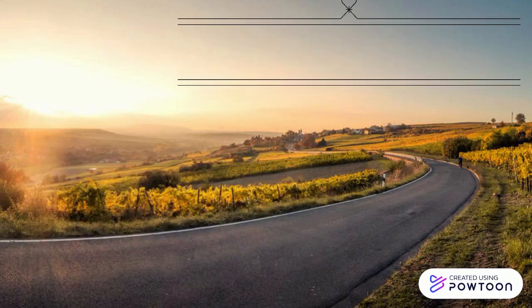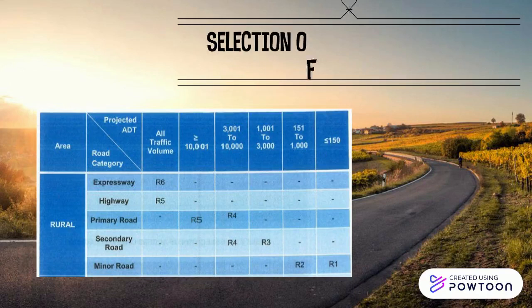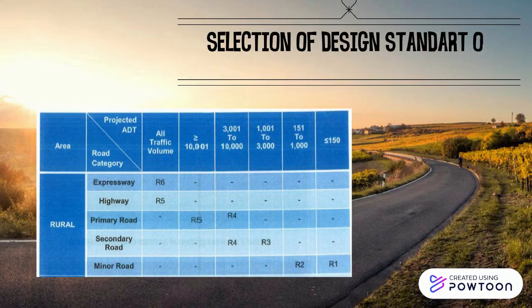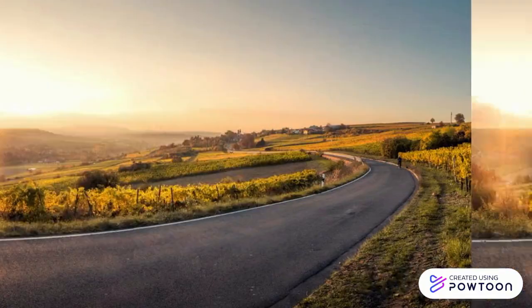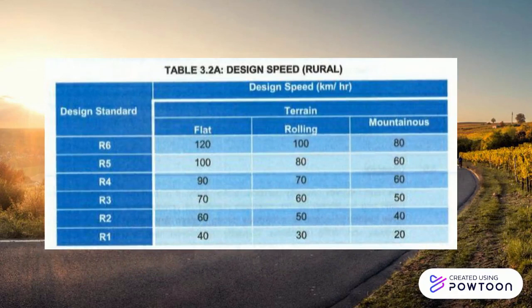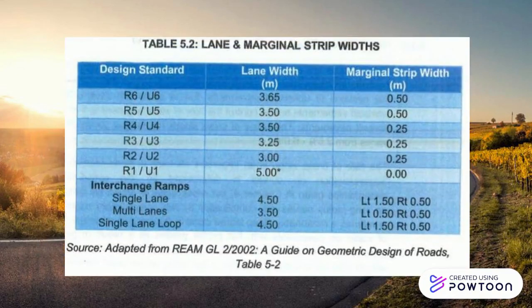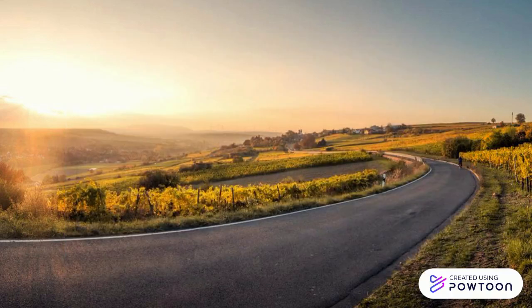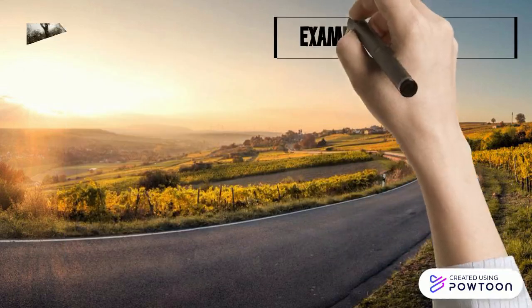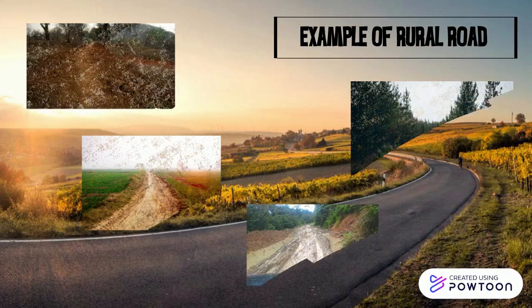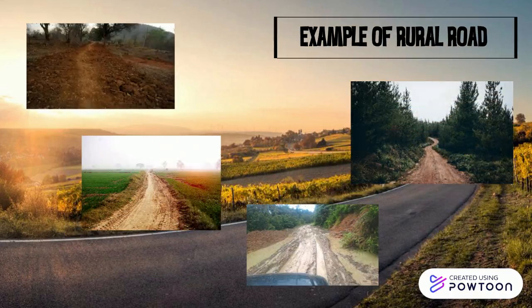This is the design standard of rural roads. The selection of the required design standard should begin with the assessment of the function of the proposed road and the area. This picture explains about design speed for rural roads. This picture explains about lane and cross-section geometry. The diagram shows the rural roads in Malaysia.